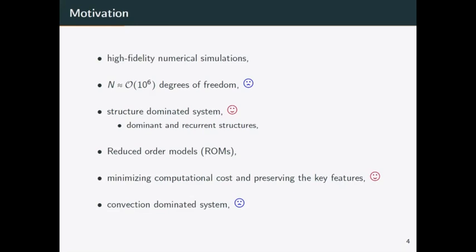This is important: the ROM will be computationally efficient because the order of your system will no longer be millions or billions — it will be something like 10, at most 100 — while preserving key features. However, if your system is convection-dominated, for example if you have a traveling wave and you don't have dominant and recurrent structures, then using the basic reduced order model will not be enough to capture the main dynamics. In that case, we need to add an extra term to get more information from the system.